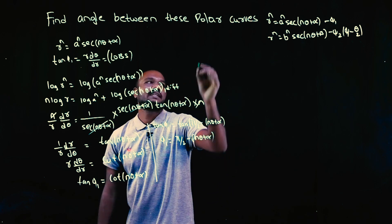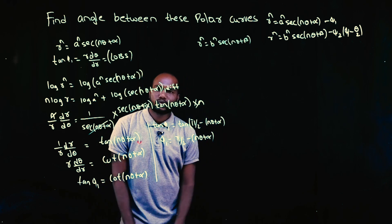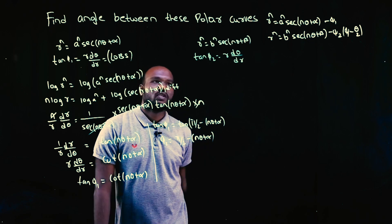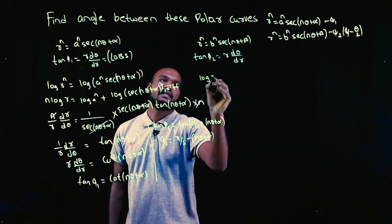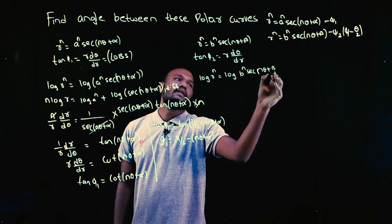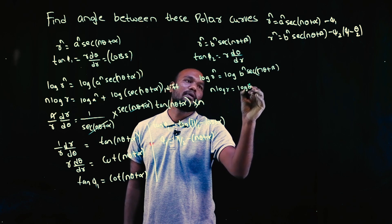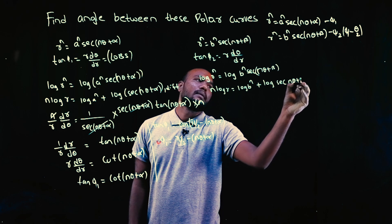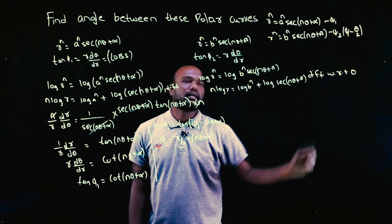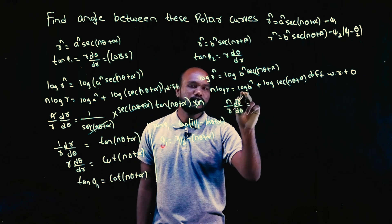Now for the second curve: r^n = b^n · sec(nθ+β). To find φ₂ we again need tan φ₂ = r·(dθ/dr). Taking log on both sides: log(r^n) = log(b^n · sec(nθ+β)), giving n·log(r) = log(b^n) + log(sec(nθ+β)). Differentiating with respect to θ: (1/r)·(dr/dθ) equals the derivative of the right side.